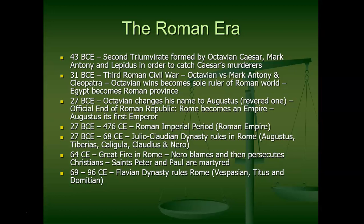The Second Triumvirate is actually legally formed — voted on by the Senate. Octavian Caesar, Caesar's adopted son, along with Mark Antony and Lepidus — two of Caesar's generals — are given power over the Roman world to capture and arrest those who murdered Caesar. The assassins scattered and raised armies in different places, but eventually all were rounded up; Brutus and Cassius in particular killed themselves before capture. All their property was confiscated and split among the three triumvirs.